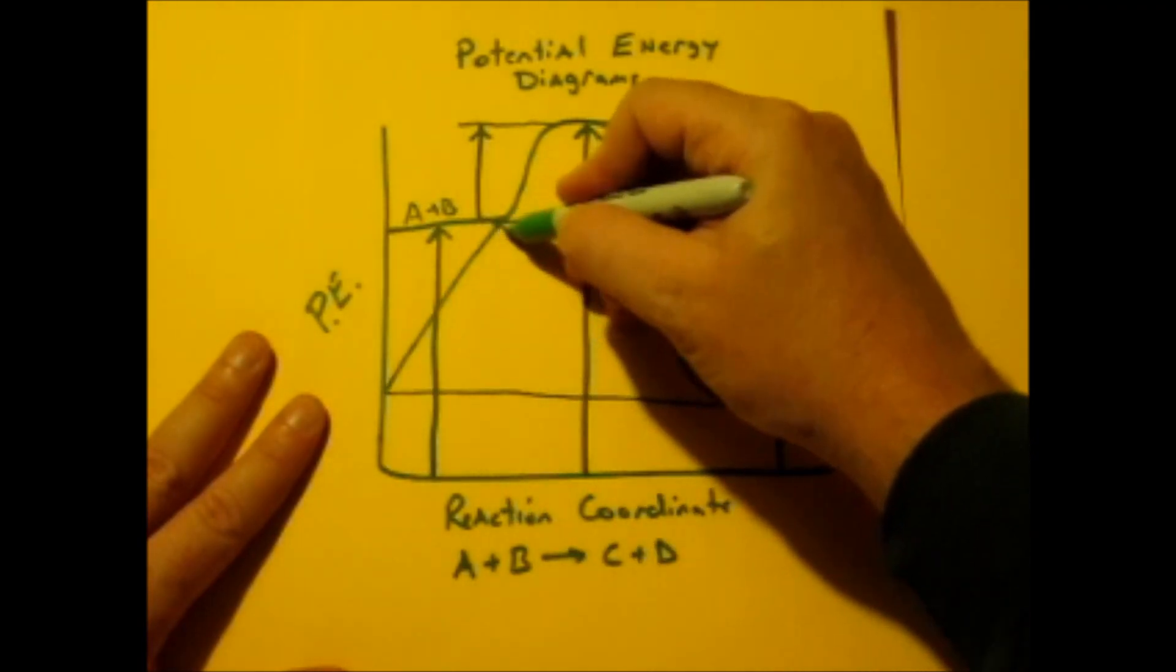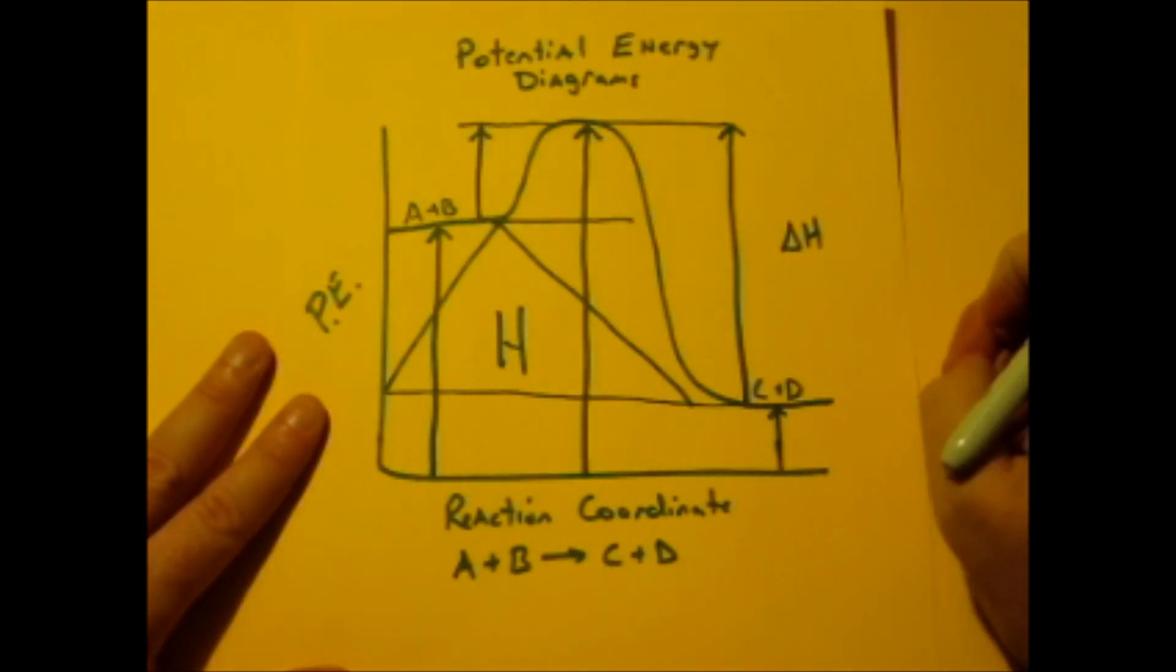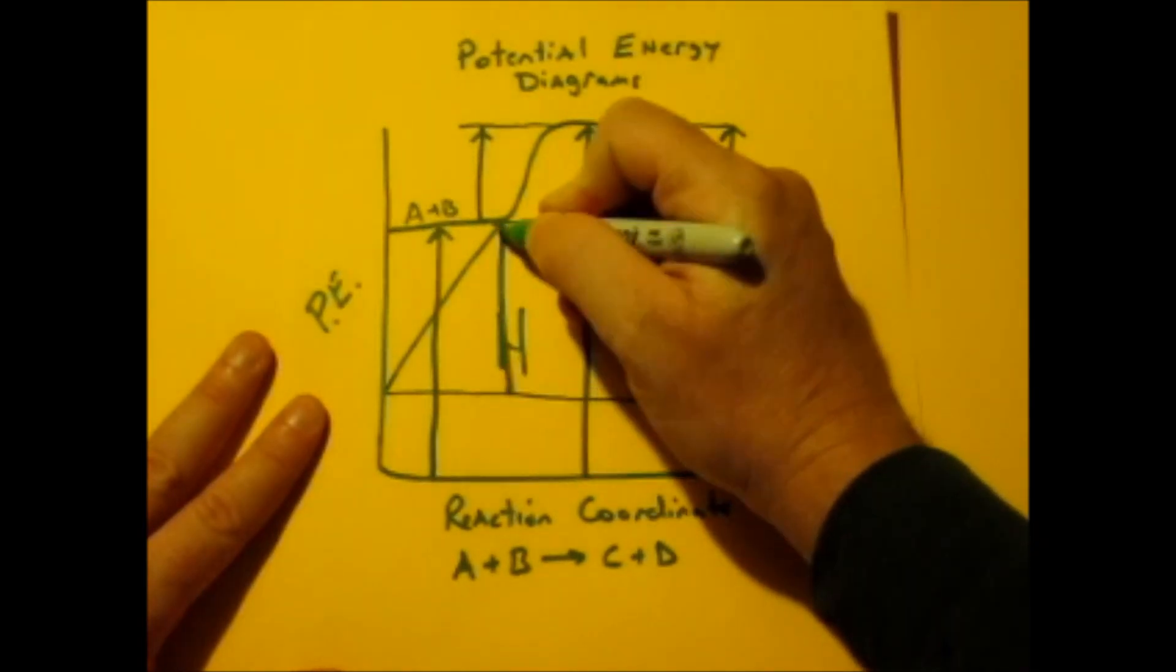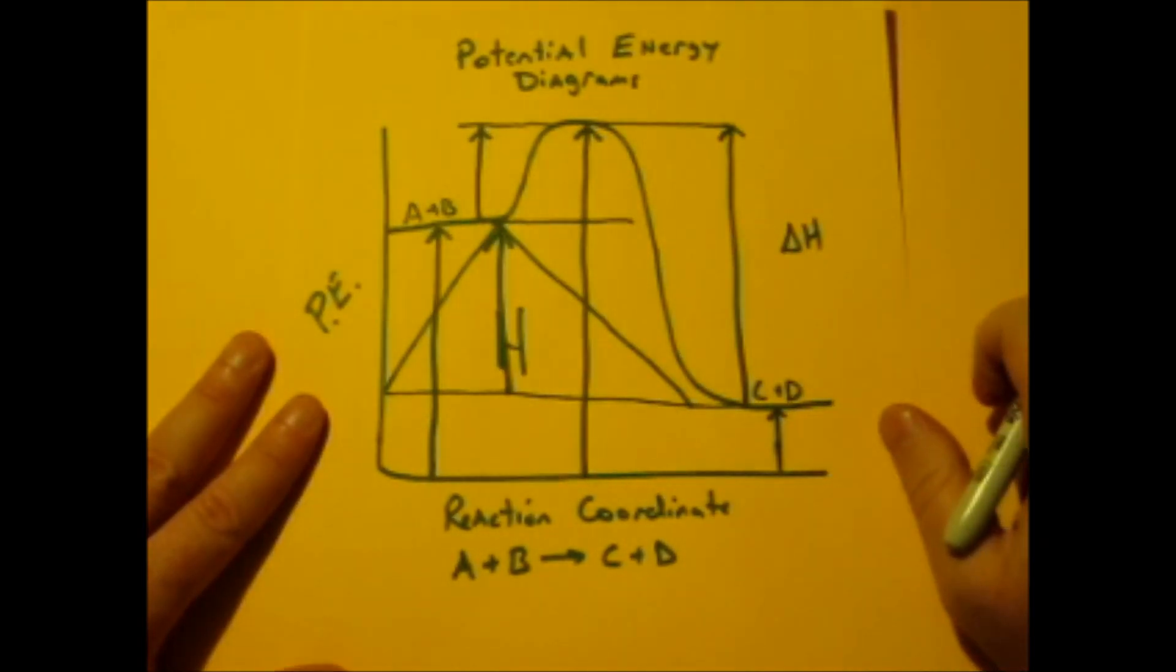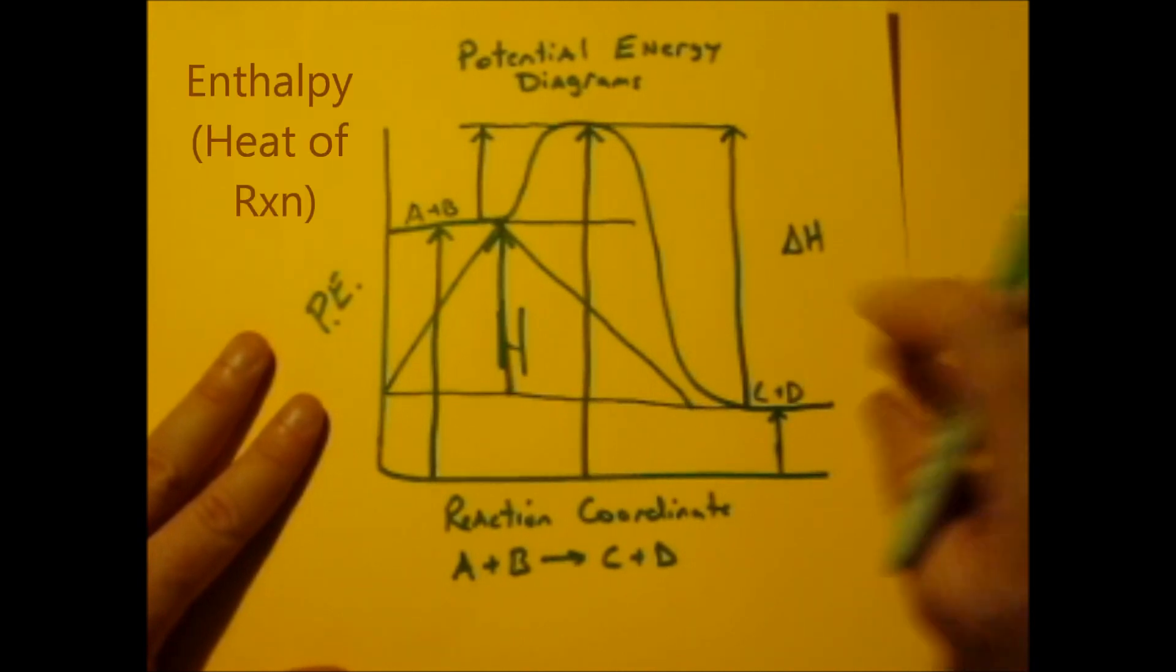So what I like to do is just make it into a big triangle, because delta H is a triangle with an H. So the height of that triangle is the amount of energy that's required for the heat of reaction, or your enthalpy, your delta H.